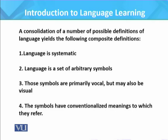First, language is systematic. All languages have their systems of arrangements. It has finite symbols which can be infinitely arranged — infinite sentences with finite symbols. Language has a system and within it subsystems also; for example, the grammatical system of language has within it morphological and syntactic systems. Second, language is a set of arbitrary symbols. Arbitrariness in linguistics is the absence of any natural connection between a word's meaning and its sounds or form.